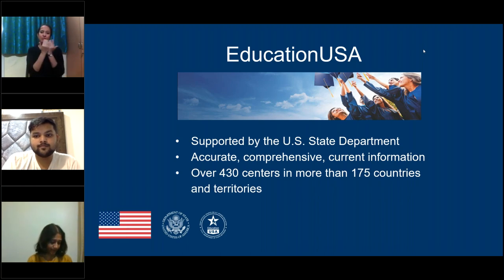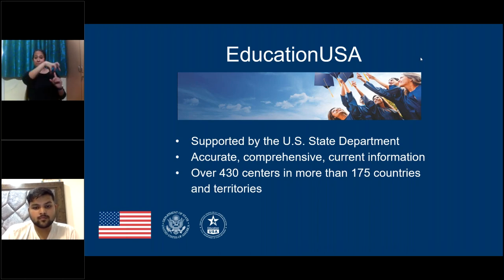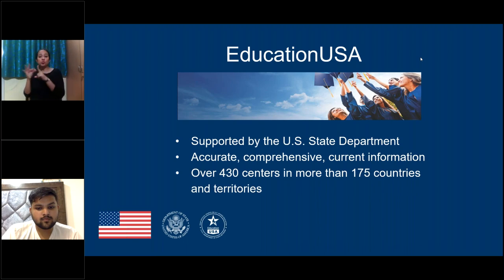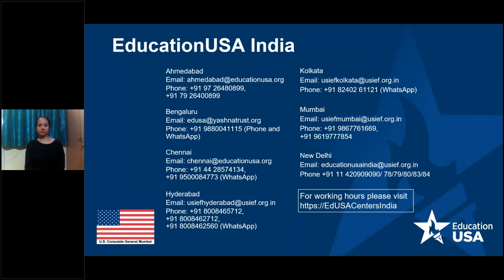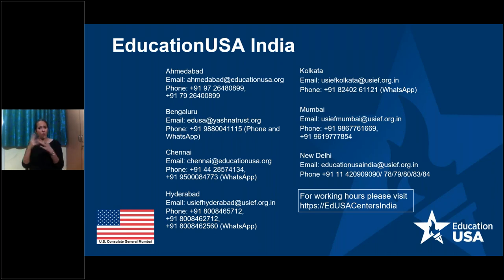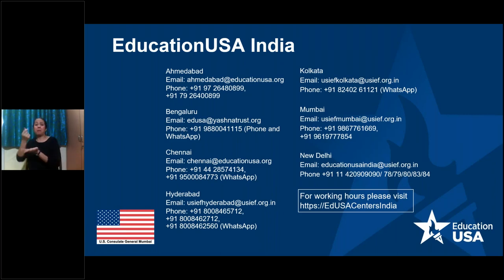EducationUSA is a U.S. State Department-supported network that provides accurate, comprehensive, and current information on studying in the U.S. We have over 430 centers in over 170 countries. There are seven centers in India located in Ahmedabad, Bangalore, Chennai, Hyderabad, Kolkata, Mumbai, and New Delhi. If you need advice on selecting universities or any step in the application process, such as writing essays or applying for financial aid, our advisors are available to help you. Do feel free to contact a center near you. You can locate a center in India or any other country on our website at educationusa.state.gov. We also have a page on the EducationUSA website with resources to help students with disabilities applying to U.S. universities.